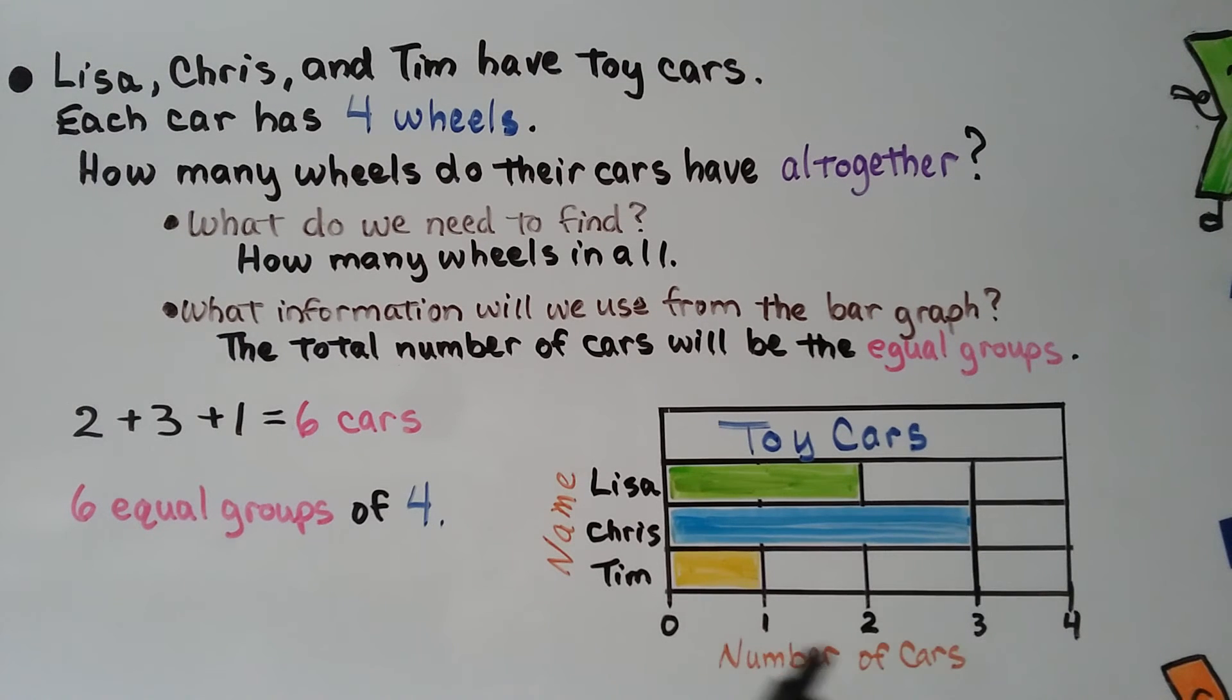So here's our title, Toy Cars. It's showing their names, Lisa, Chris, and Tim. Lisa's green, and we can see she's got two cars. Chris is the blue one. He's got three cars. Tim is the yellow. He's only got one car. We can add two plus three plus one to get the total number of cars, which is six. That means we have six equal groups, and they each have four wheels. We have six equal groups of four.